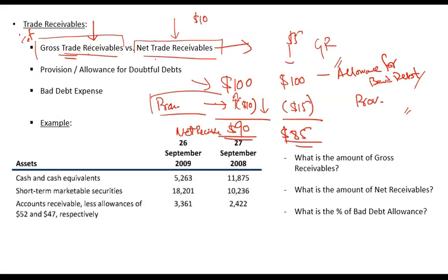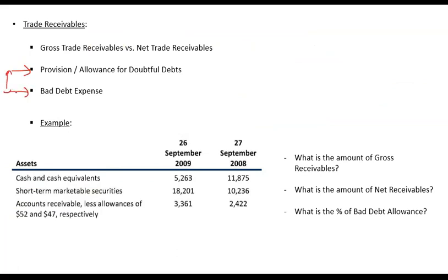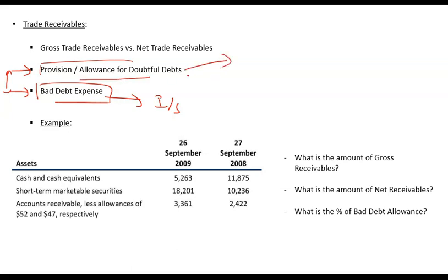As an analyst, check the provision for bad debt as a percentage of gross receivables — that is, what percentage of total gross receivables is not expected to be recovered. If this number is rising, the risk of non-recovery is increasing. If it is falling, the company may be using aggressive measures to over-report earnings by cutting the provision expense. Also note that provision for bad debt and bad debt expense are two different things: bad debt expense is the charge recorded on the income statement for a given period.